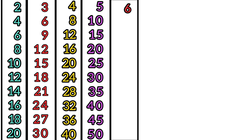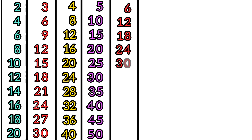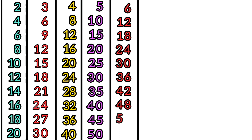6 times tables. 6 times 1 is 6. 6 times 2 is 12. 6 times 3 is 18. 6 times 4 is 24. 6 times 5 is 30. 6 times 6 is 36. 6 times 7 is 42. 6 times 8 is 48. 6 times 9 is 54. 6 times 10 is 60.